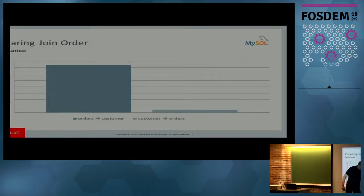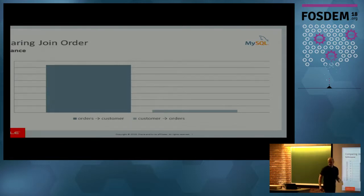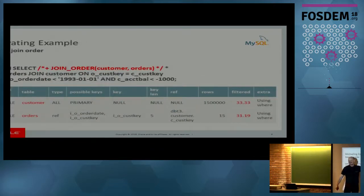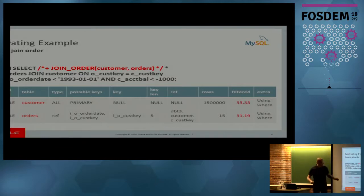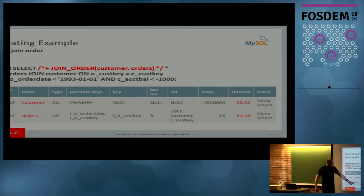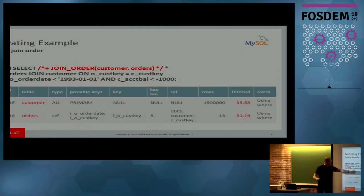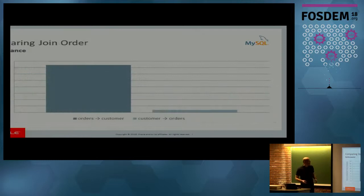When I execute these queries, if I switch the join order it's much faster — it goes from 15 seconds to one second. The reason is that there is no customer with an account balance less than minus 1,000. So if you use that order, you scan through the entire customer table, find nothing, and there are no lookups into the orders table. But the optimizer cannot know that because it has no information about the selectivity of this condition. That is where histograms come in.